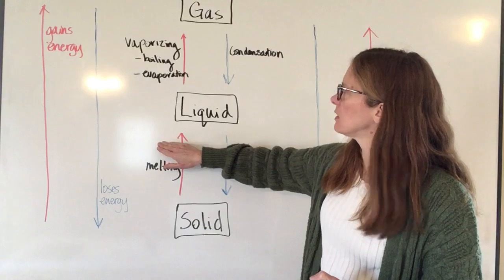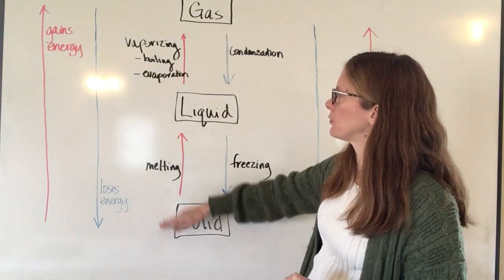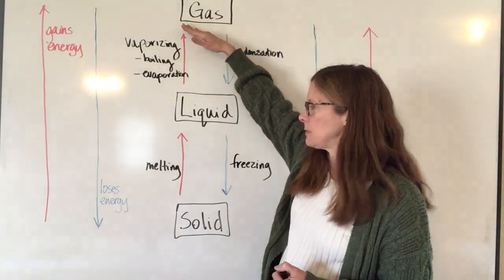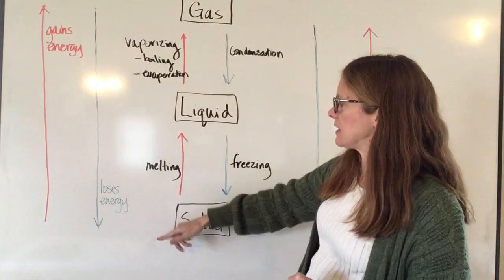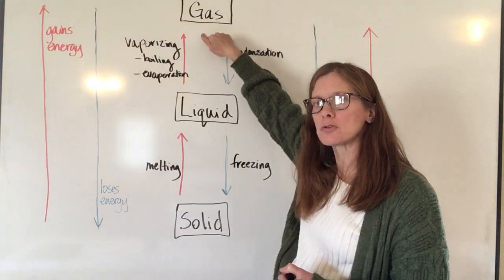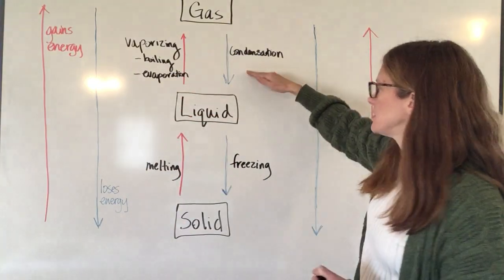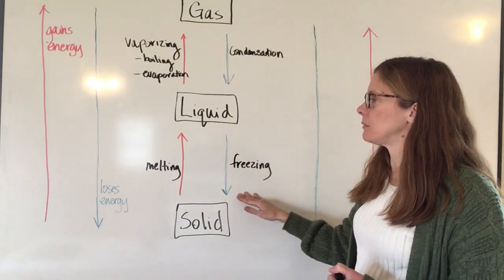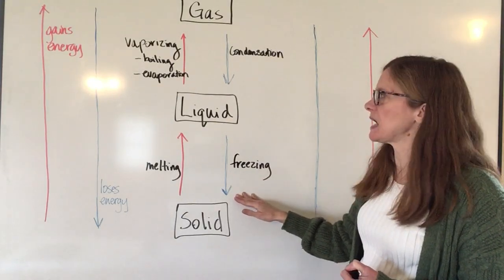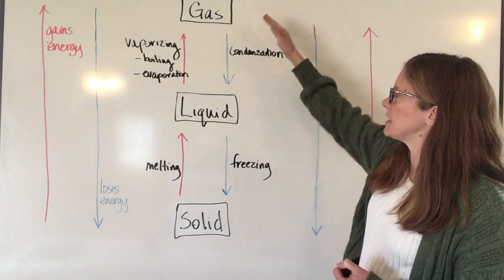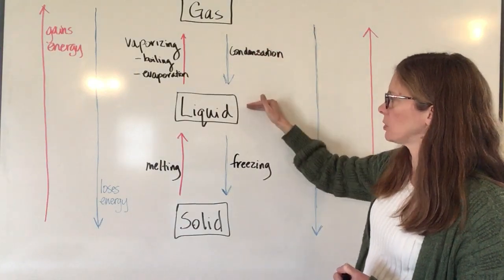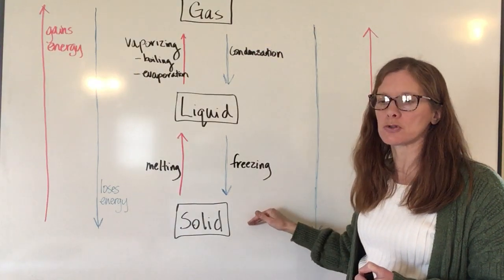So melting and vaporizing both are gains in energy because we're going to a state of matter where the particles are moving more quickly. Condensation and freezing are both changes of state where we are losing energy because in both cases, from a gas to a liquid, from a liquid to a solid, the particles are slowing down.